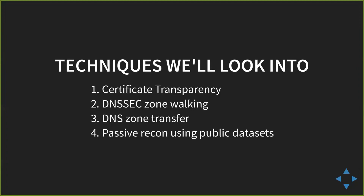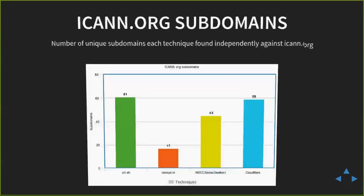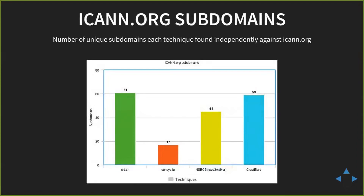To get the interest of the impatient: I ran these techniques against ICANN.org. These are the unique subdomains each technique found. I found around 61 using one technique, 17 using another, 45 using another, and 59 using yet another. We'll cover each technique — this is just to get you interested. Let's get started.